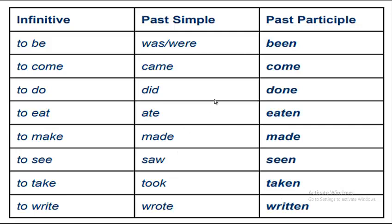Look at this table to remember the three verb forms of common verbs: infinitive, past simple, and past participle. For example: be — was/were — been; come — came — come; do — did — done; eat — ate — eaten; make — made — made; see — saw — seen; take — took — taken; write — wrote — written. These are irregular verbs.